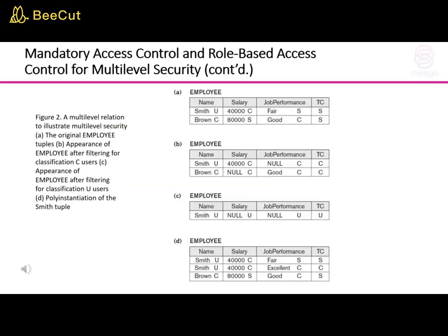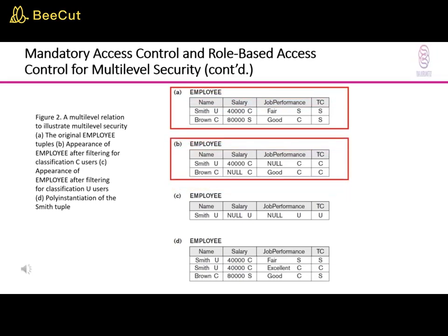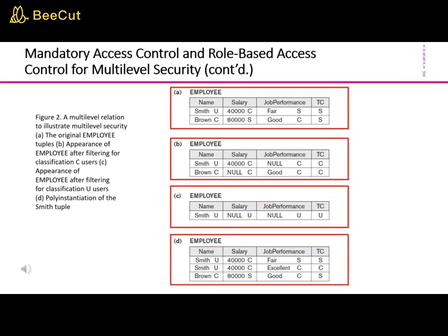This is illustrated with a simple example of a multi-level relation shown in a figure. A is the original employee tuples; B is the appearance of the employee relation after filtering for classification C users; C is the appearance of the employee relation after filtering for classification U users; and D is the poly-instantiation of the Smith tuple.